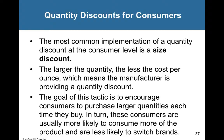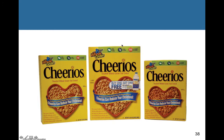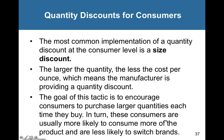Another consumer pricing tactic is the quantity discount, also known as a size discount. This is common in household goods like dishwashing detergent, laundry detergent, and cereal. The larger the quantity you purchase, the lower the cost per ounce — meaning the manufacturer is providing a quantity discount. Even though they charge less per ounce, consumers are more likely to continue consuming that product and less likely to switch brands.